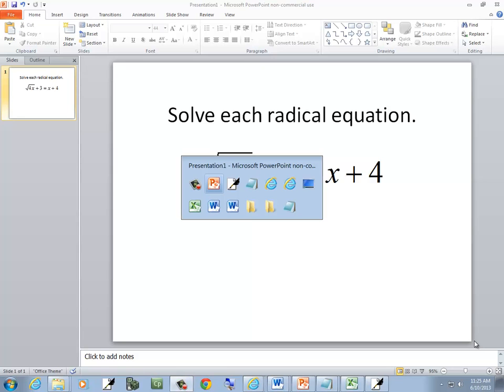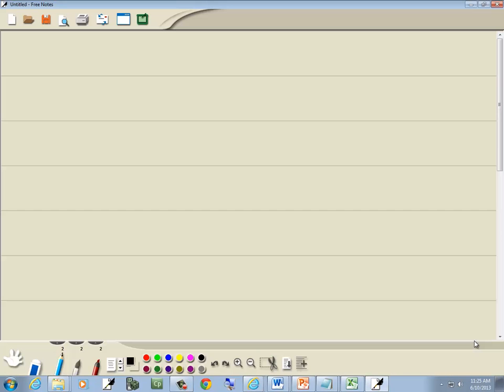Let's take a look at this radical equation. We've got square root of 4x plus 3 is equal to x plus 4.